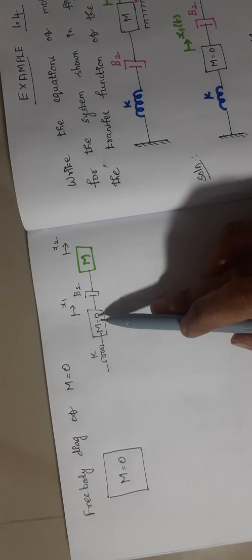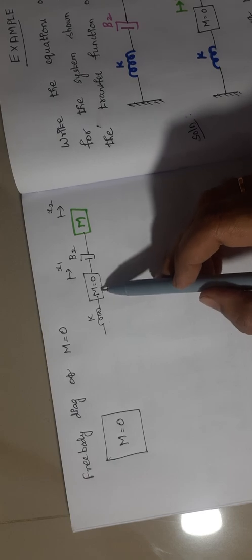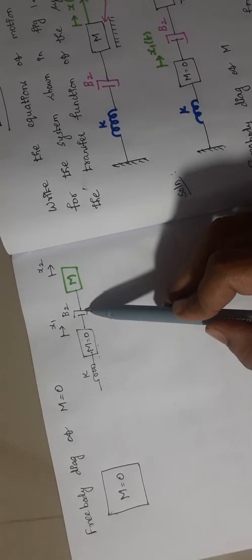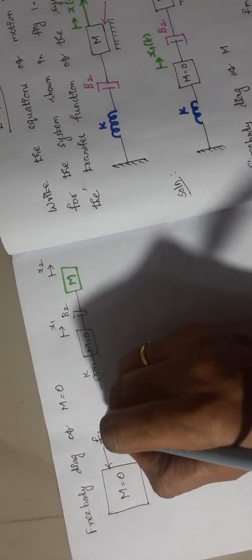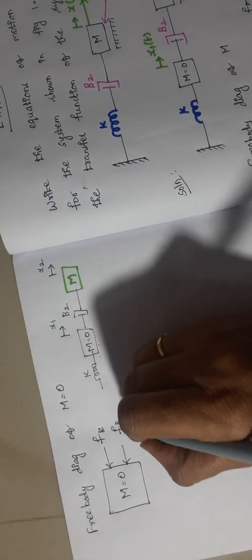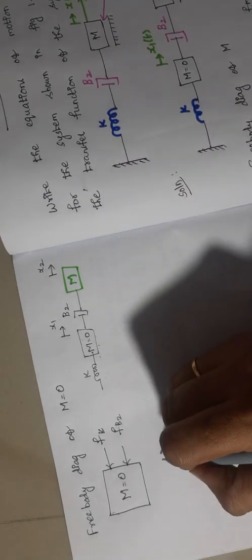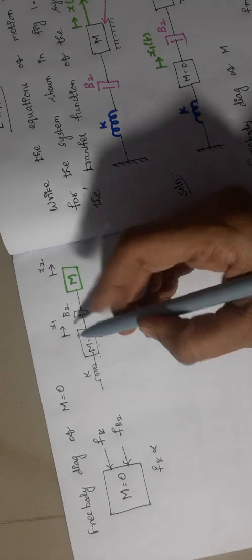Now we are going to draw the free body diagram of mass M equal to 0. This mass M equal to 0 is connected to two elements — one is K and another one is the dashpot. Since there is no mass, there will be no opposing force produced by this mass M equal to 0. We have to consider only the opposing force produced by the spring and the dashpot. The opposing forces are Fk and Fb2. Fk is directly proportional to x1, which is equal to K·x1.